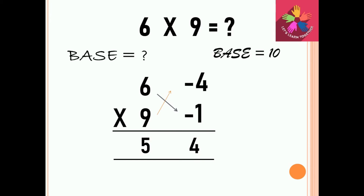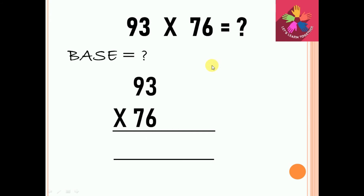So our answer is 54. Therefore, 6 into 9 is equal to 54. Left-hand side is the sum and the right-hand side is the product. This is the same trick you can use for long number multiplication. So let's see the next example: 93 into 76.